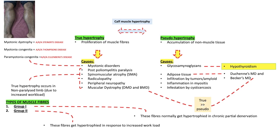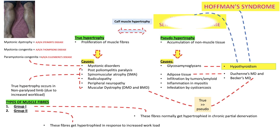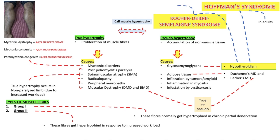It is found that true hypertrophy is much more common than pseudo-hypertrophy in contributing to calf muscle hypertrophy. Calf muscle hypertrophy in hypothyroidism is known as Hoffman syndrome, sometimes referred to as Kocher-Debré-Sémélaigne syndrome. Hoffman syndrome occurs in adults, whereas Kocher-Debré-Sémélaigne syndrome is seen in children with cretinism. These are two important syndromes associated with calf muscle hypertrophy in hypothyroidism. Thank you.